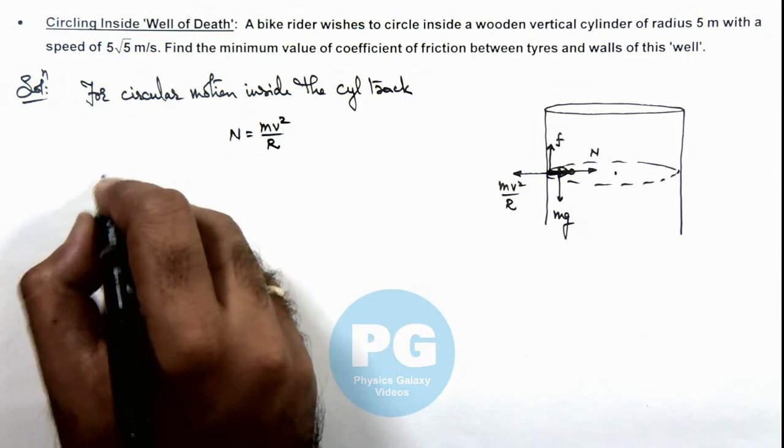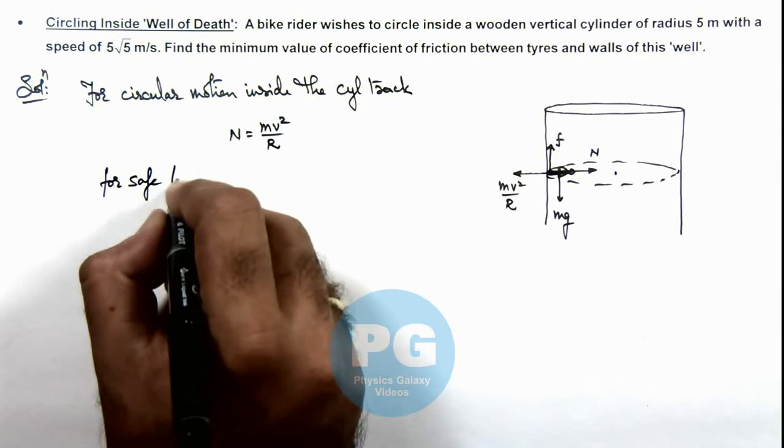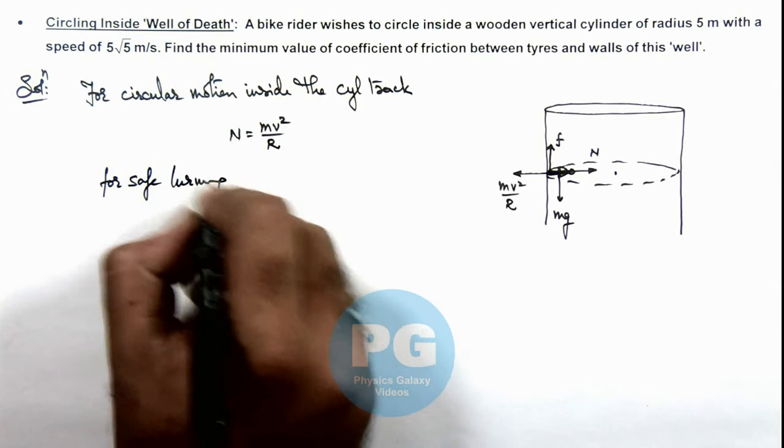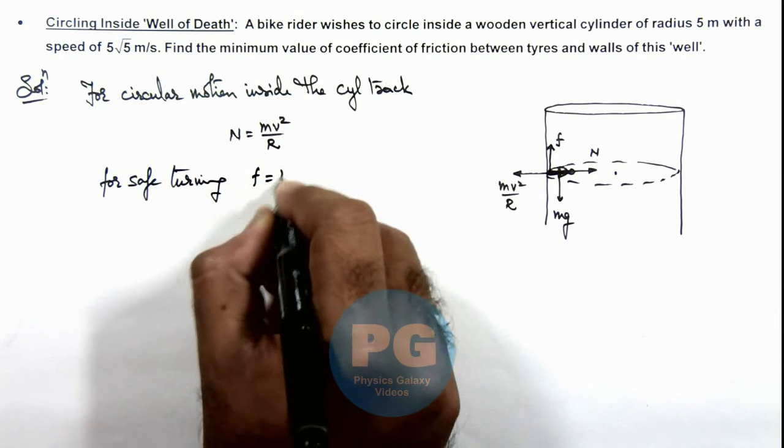And for safe turning we can write friction would be balancing m g.